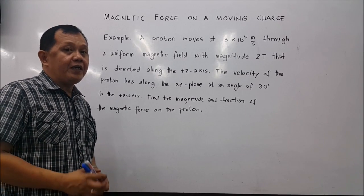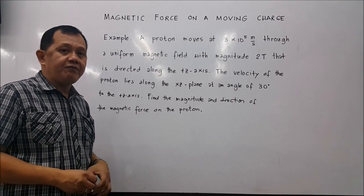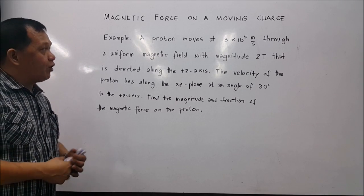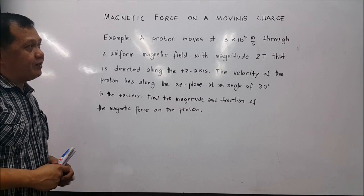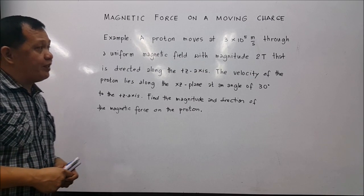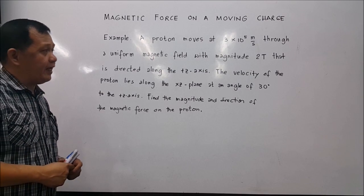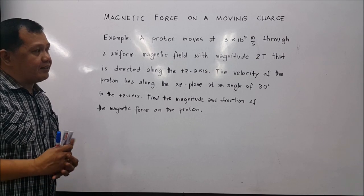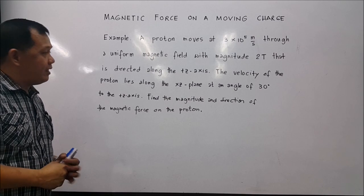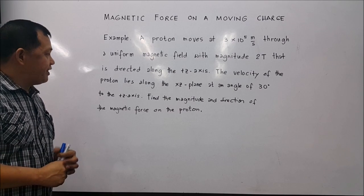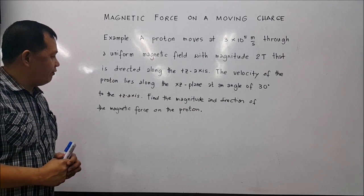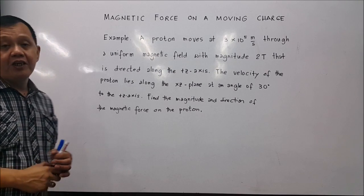Let's have an example of the magnetic force exerted by a magnetic field on a moving charge. A proton moves at 3×10⁵ meters per second through a uniform magnetic field with a magnitude of 2 tesla directed along the positive z-axis. The velocity of the proton lies along the x-z plane at an angle of 30 degrees to the positive z-axis. Find the magnitude and direction of the magnetic force on the proton.